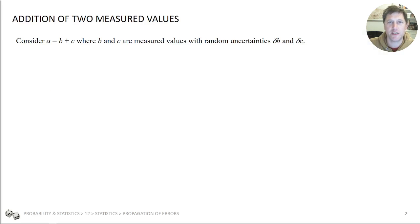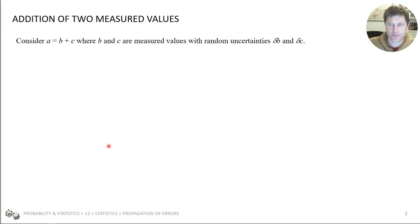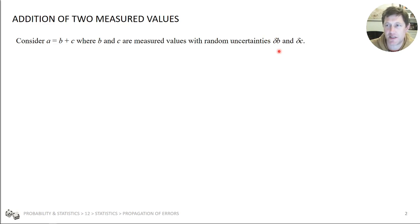So the scenario is we want to calculate A, which is the sum of two measured values, B plus C. They both have some random uncertainties, delta B and delta C — this is their associated error. In theory we're talking about the standard deviation of each of these variables. In practice you might not know that exactly, but you have some indicative value of what the error associated with them is.